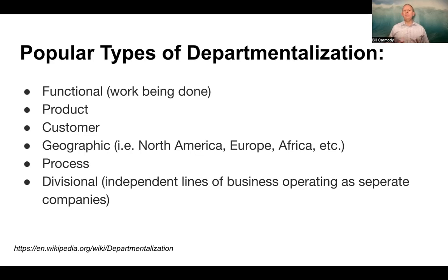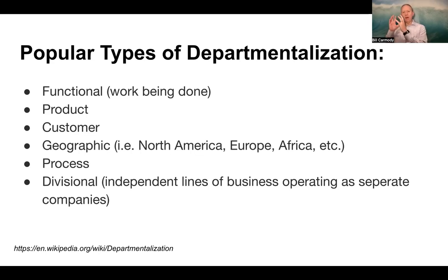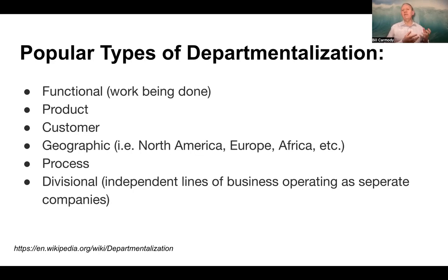Or it could be a division — independent lines of business operating as separate companies. For example, if I know that this part of my business is very different from another, I'm going to have a division around the types of lines of business we operate. If I have a publishing business, all the things related to distribution of books would go here, but I might have a ghostwriting division helping people write their books, and a promotions and publicity department promoting the books — that's a different division.